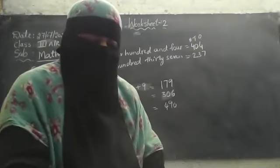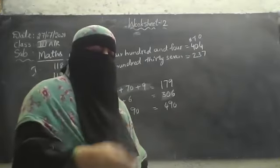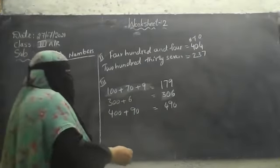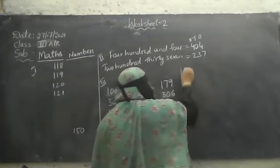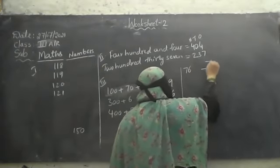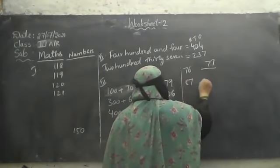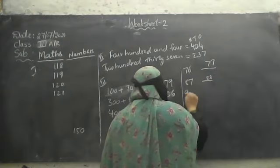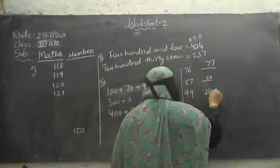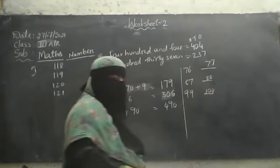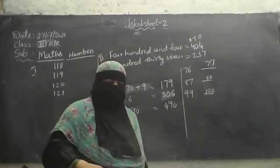Write the successors of the following. Successors means the number which comes next is called as successors. For example, 76, 77, 87, 88, 99, 100. In this way, you have to complete writing the successors numbers also.